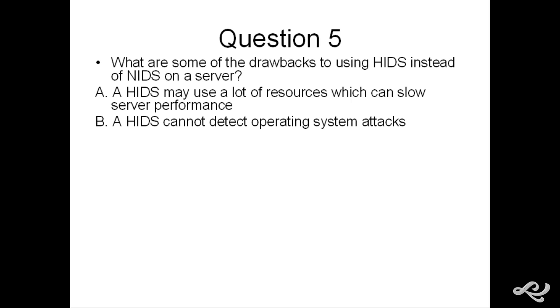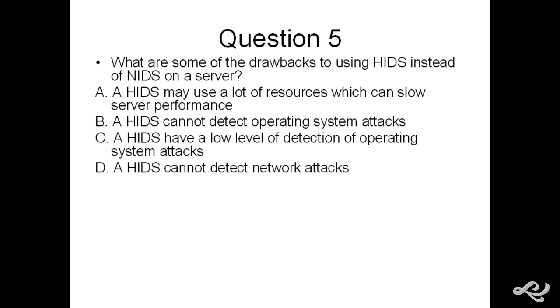B. A HIDS cannot detect operating system attacks. Well, it can. We know that a HIDS can detect operating system attacks, like viruses and worms and whatever other malicious attacks, trojans. That's what the HIDS is there for. C. A HIDS have a low level of detection of operating system attacks. It can detect operating system attacks. That's its job. That's its responsibility. So it does not have a low level. It has a high level of detection, especially if it's updated.